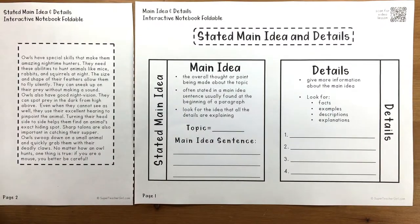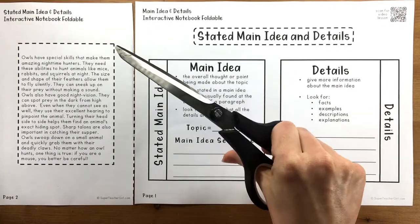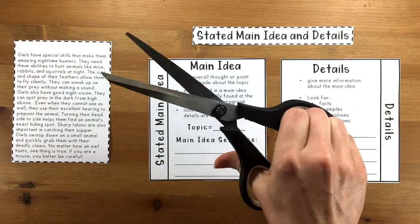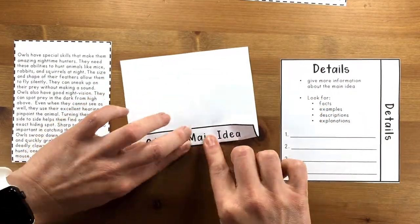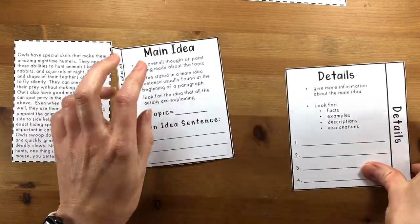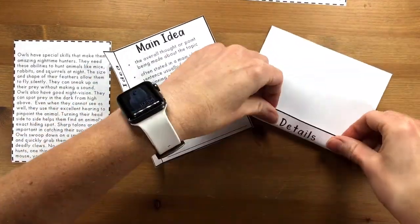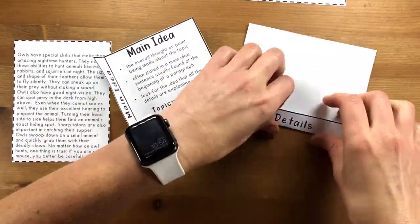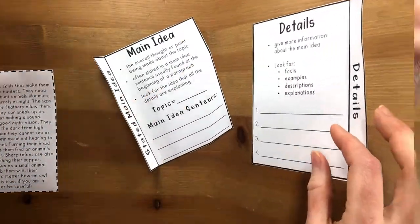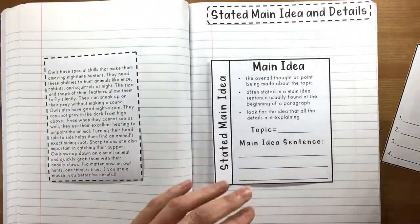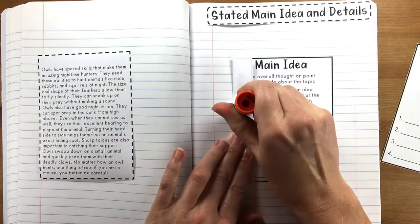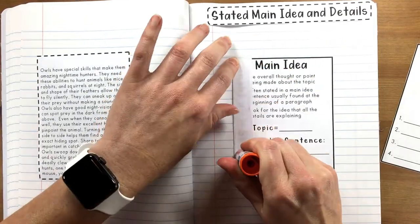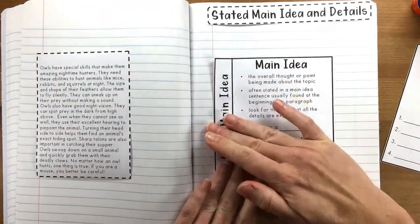The first thing you're going to need to do is get these handouts cut out. At any time during the video, if I'm ahead of you, you can pause the video or back it up so that you can catch up. Now we're going to fold on these black lines. I always fold backwards so I can see the black line, then fold forward, and then we're ready to put it in our interactive notebook. You want to line it up with the pink line on the left side, then flip it and glue just that flap and smooth it down.